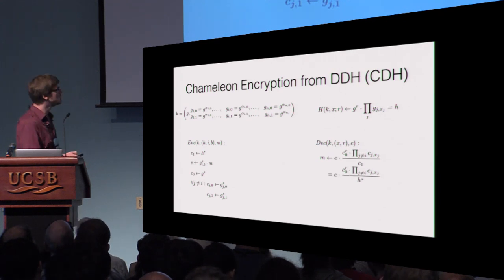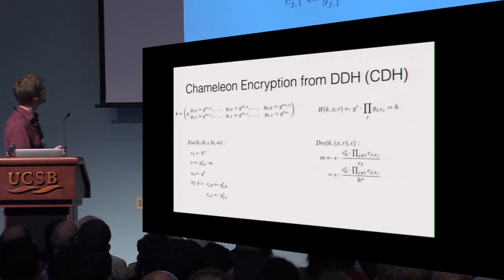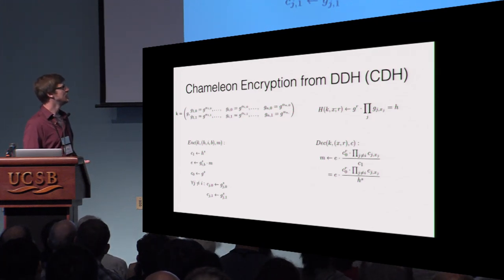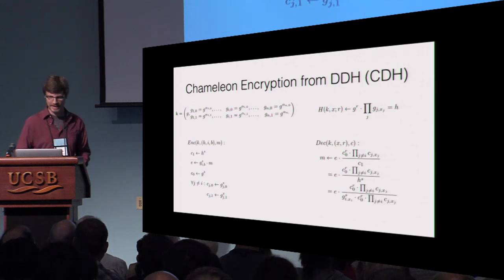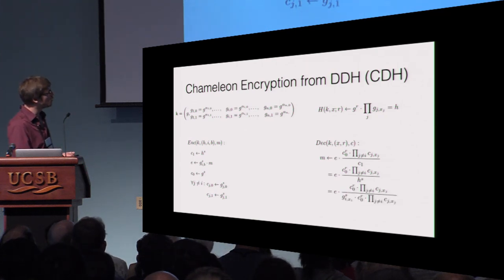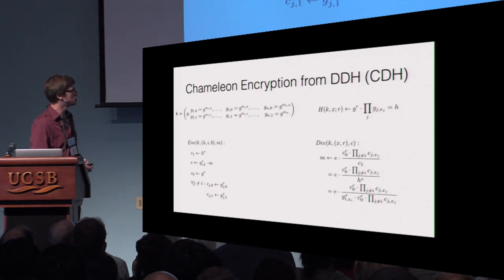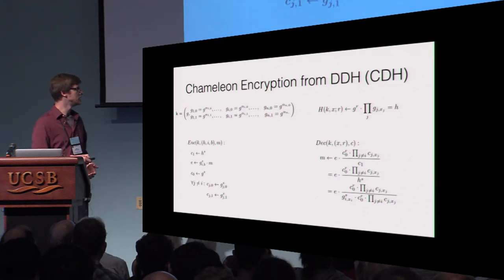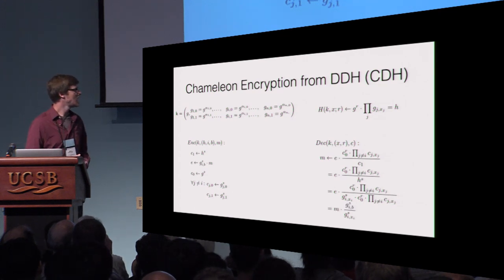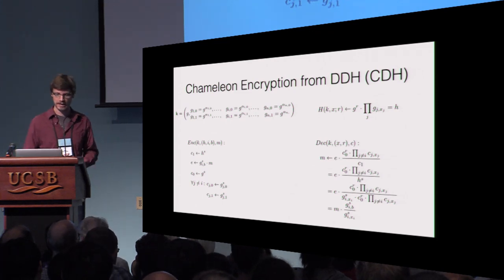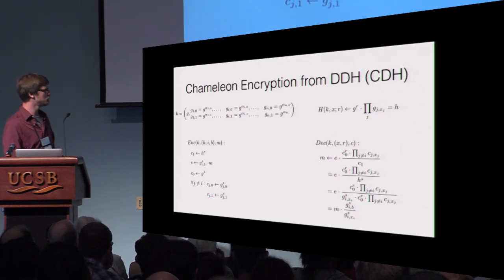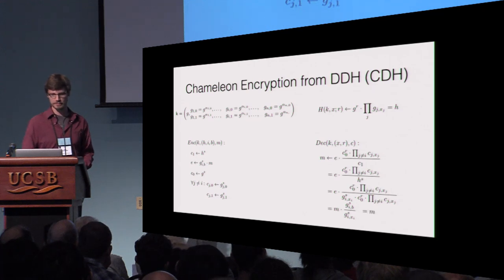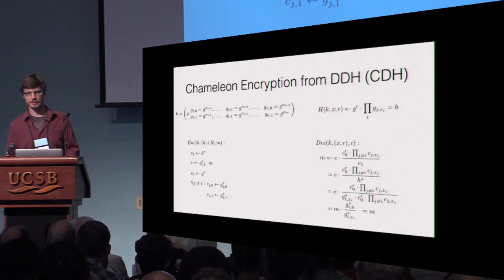Decryption computes a product: it takes the term e, computes z_0^r times the product over j ≠ i of c_{j,x_j}, and divides by c_1. To see why this is correct: c_1 is just h^s; plugging in h as the hash value of x under randomness r and pulling out the g_{i,x_i}^s term, we can cancel terms, and what remains is m · g_{i,b}^s / g_{i,x_i}^s. If the preimage fulfills the condition that the i-th bit is b, those two terms cancel and we have m. For the security reduction, please refer to the paper.